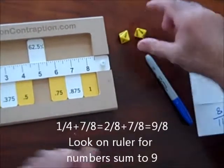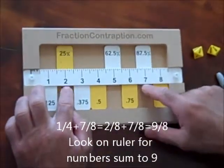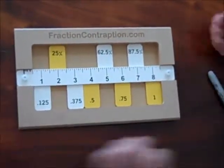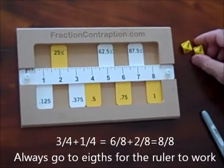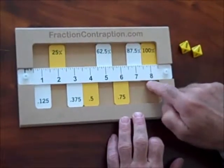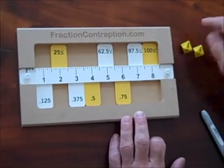2 eighths and 7 eighths is 9 eighths, do the 7 and the 2 to get 9. 6 eighths and 2 eighths is 8 eighths, look on the ruler to 8 eighths is 1, 3 quarters and a quarter is 1.